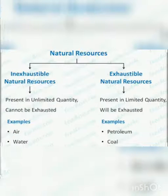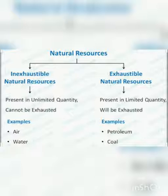Natural resources can be classified into two types: exhaustible resources and inexhaustible resources. Let's understand them one by one.